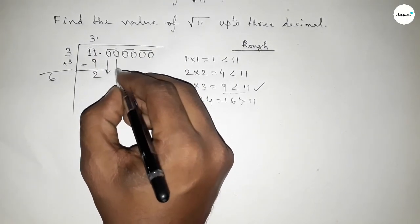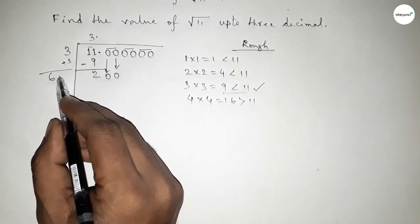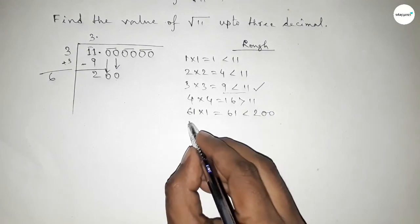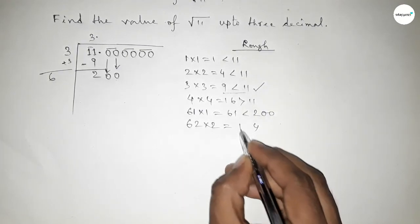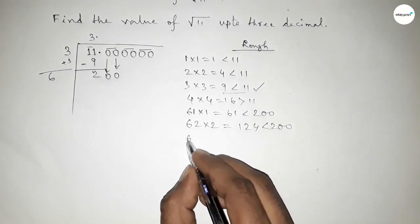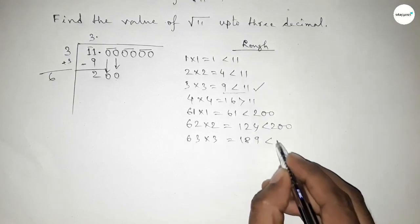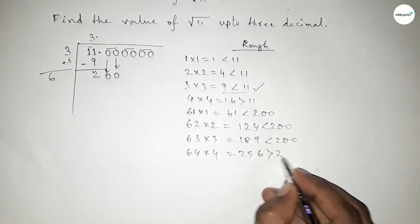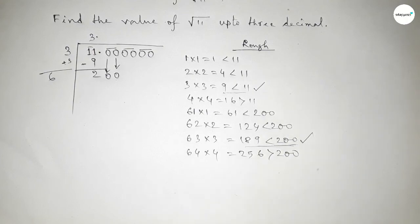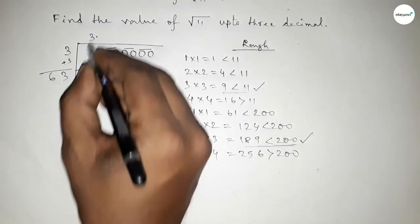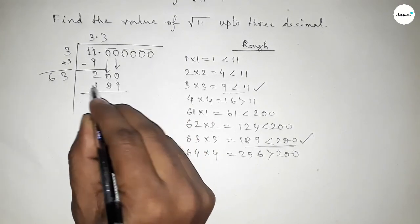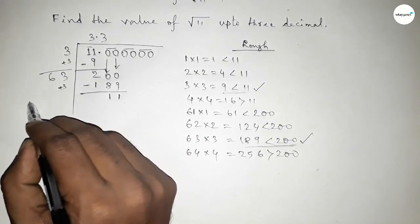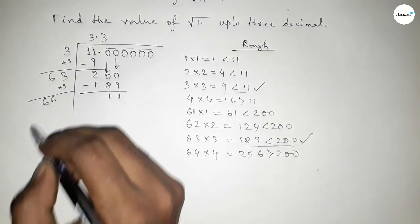The decimal point goes here and the next pair of zeros comes down. Now beside the 6, we need to find a digit such that 6-something multiplied by that digit is less than 200. Putting 2 gives less than 200, putting 3 gives 189 which is also less than 200, but putting 4 gives a value greater than 200. So we put 3, giving 189. Subtracting gives 11. The last digit is 3, so adding 3 gives 66.